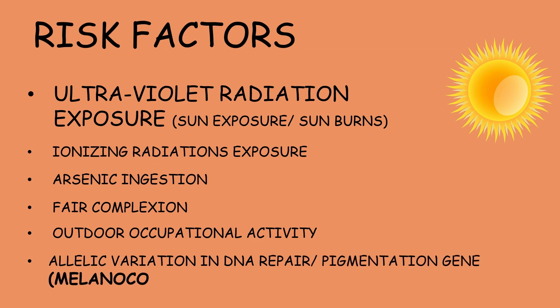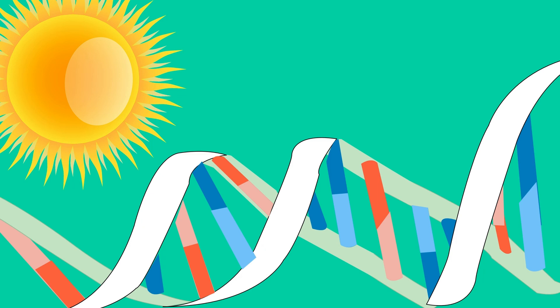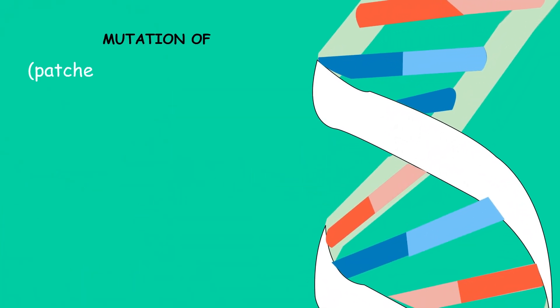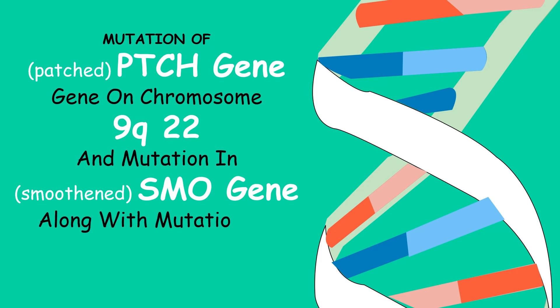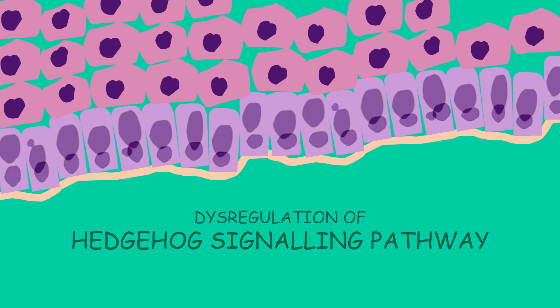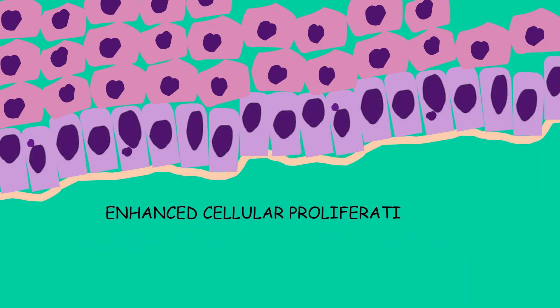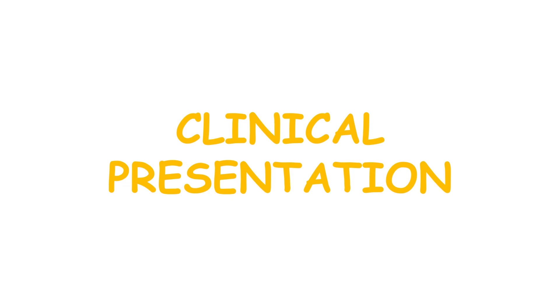An allelic variation in DNA repair or pigmentation genes, like the melanocortin-1 receptor gene, may also increase the susceptibility of a person for developing basal cell carcinoma. Damage to the DNA may cause mutation of the patched gene on chromosome 9q22 and the smoothened gene, along with mutations of TP53. These mutations result in dysregulation of the hedgehog signaling pathway, causing enhanced cellular proliferation of the basal cell layer and hence giving rise to basal cell carcinoma.